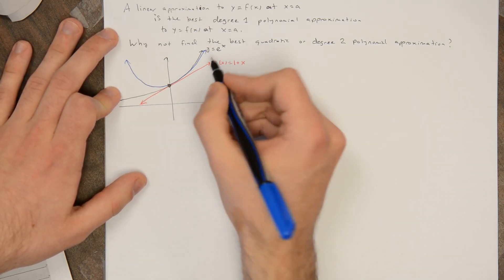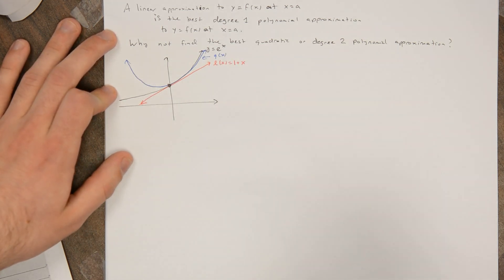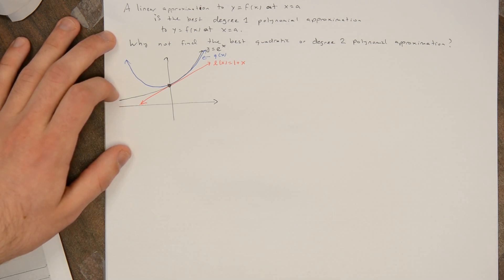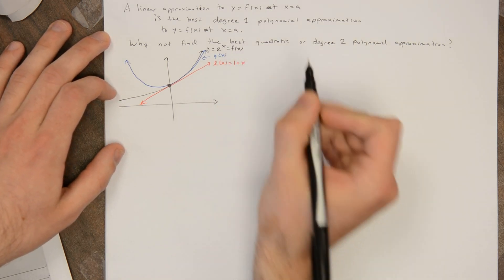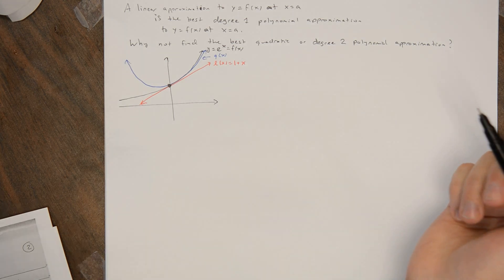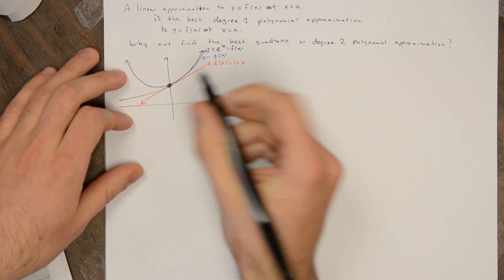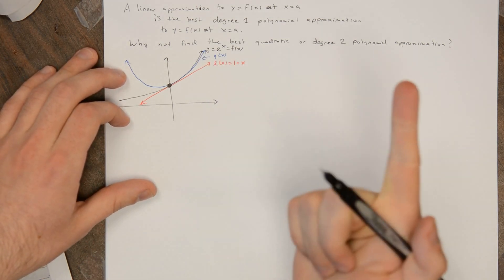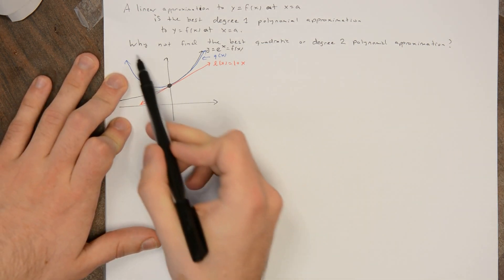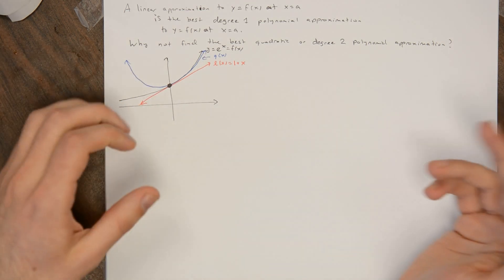Eventually it's going to fall behind, because e^x grows faster than any quadratic like x². But I should be able to find a quadratic function q(x) that fits the curve better close to x equals 0. What did l(x) satisfy? It satisfied that it went through the same point as the function and had the same derivative as the function. When I consider a quadratic, I can not only match the point and the derivative, but I have another degree of freedom — I can make sure it has the same second derivative, matching the concavity of the function.